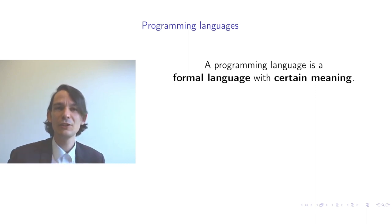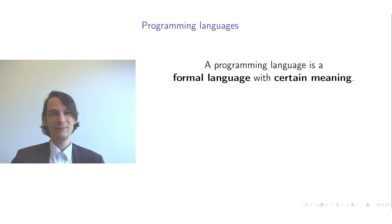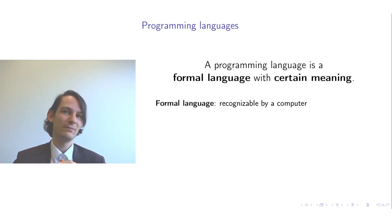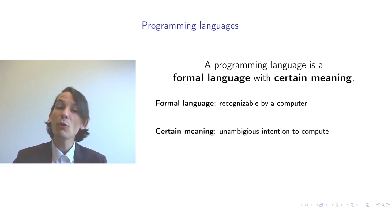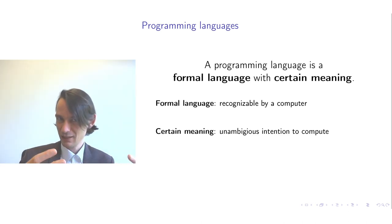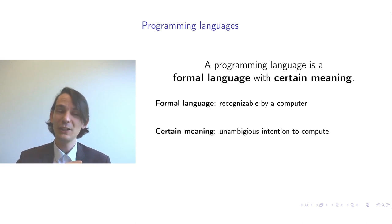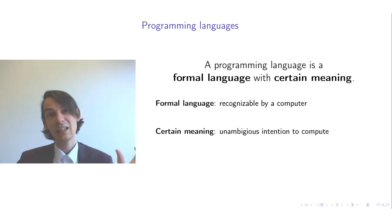For that, let's start with a definition of a programming language — what every programming language has in common. A programming language is a formal language with a certain meaning. By formal language, I mean that programs written in the language must be recognizable by a computer. By certain meaning, I mean that the programs you write in a programming language are unambiguously meaning something — namely, describing an intention to perform computations. A programming language consists of the formal language part, making it recognizable by a computer, but moreover it needs to have an unambiguous meaning which intends to perform computation.